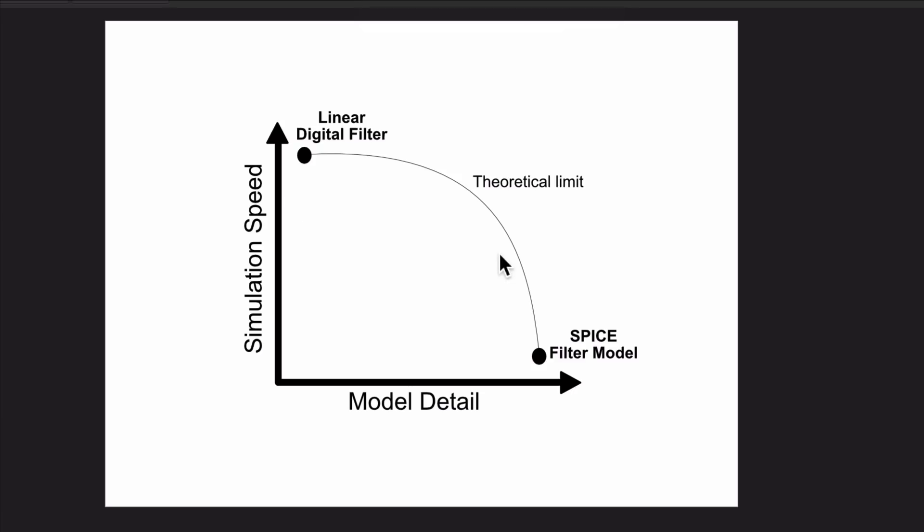For example, this is a simple graph that I made. On the x-axis we have the amount of detail that we put to the model, and on the y-axis we have a representation on how fast the model will run. I mentioned before spice models are very detailed but very very slow, so we cannot achieve a very large speed.